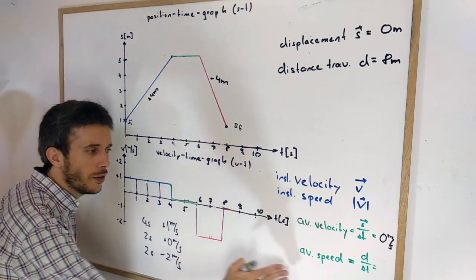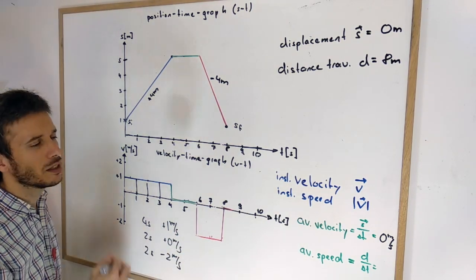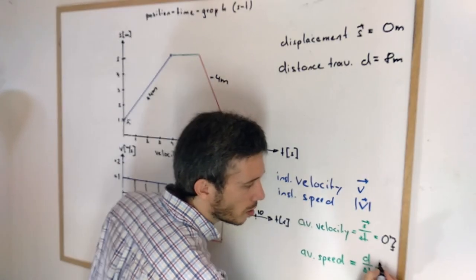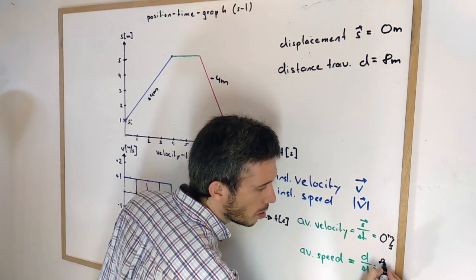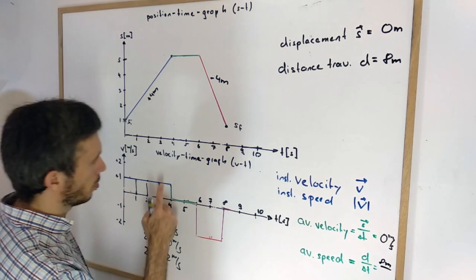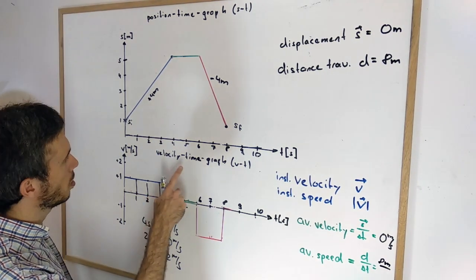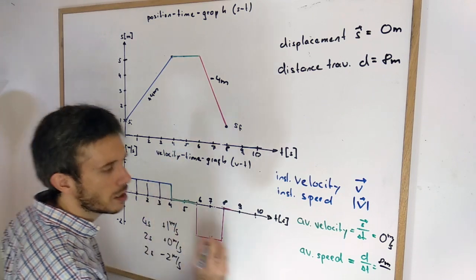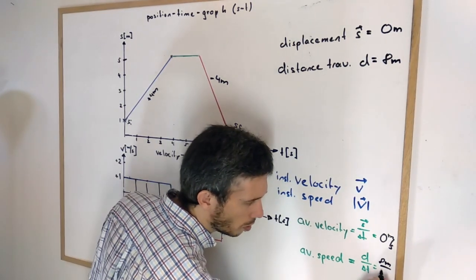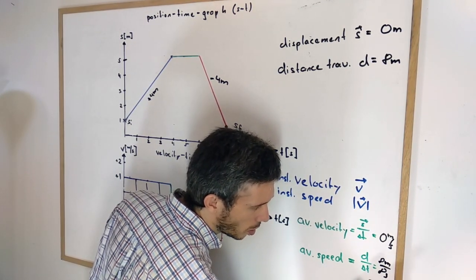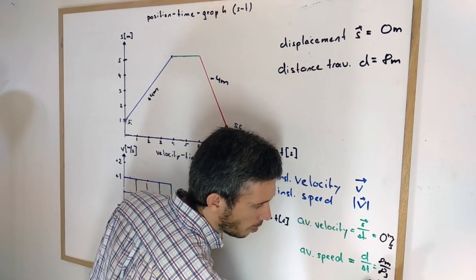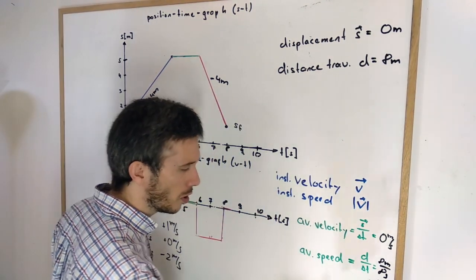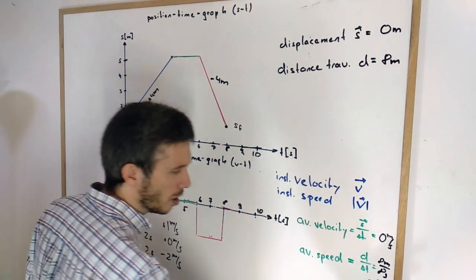For the average speed, we take the distance traveled over time. We had 8 meters over 8 seconds, which gives an average speed of 1 meter per second. Again, this is not a vector, so we just give 1 meter per second.